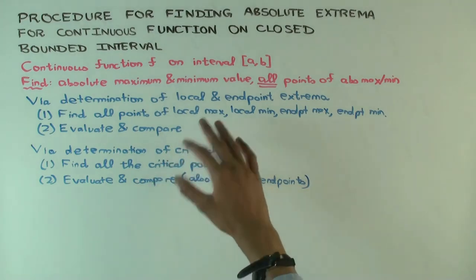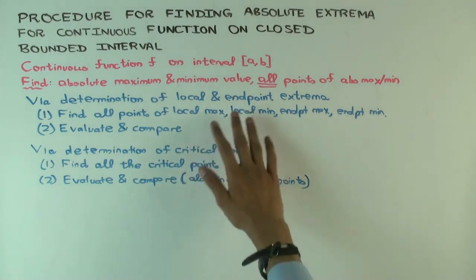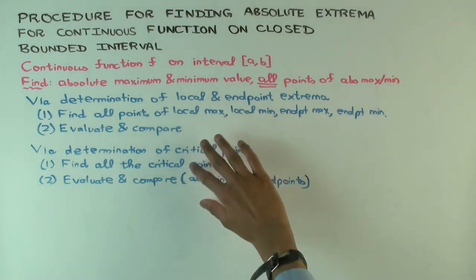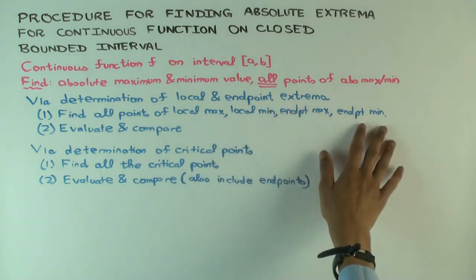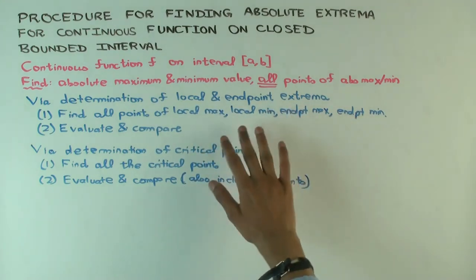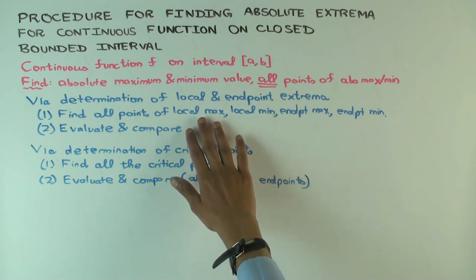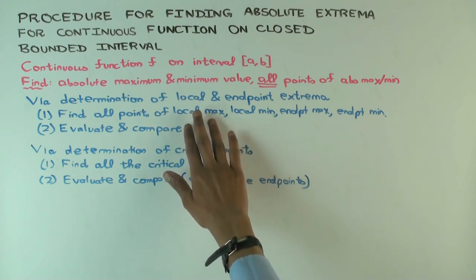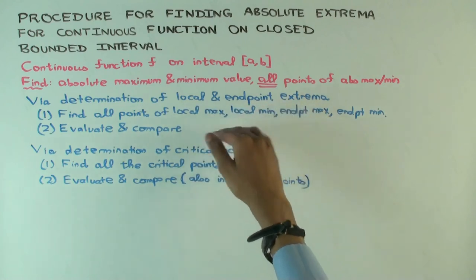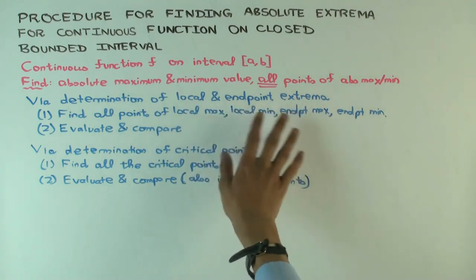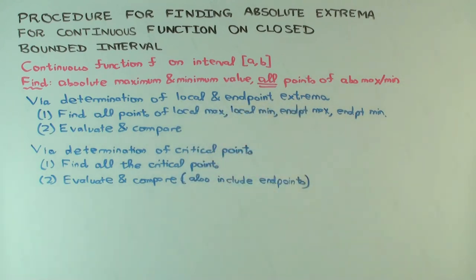Moreover, if you have to find both absolute max and absolute min, then these two procedures are not very different — you have to evaluate all the candidates anyway. But if you only need to find the absolute max, it may make sense to first filter down to local max only and then evaluate, because that's a much smaller set of points than all critical points.